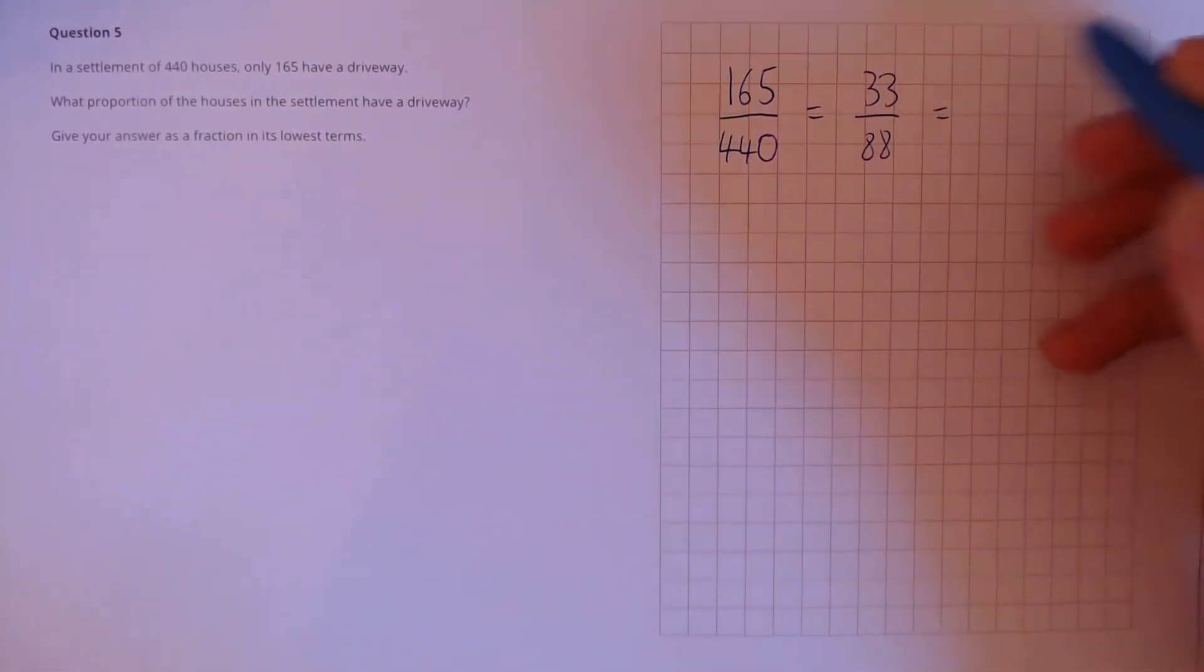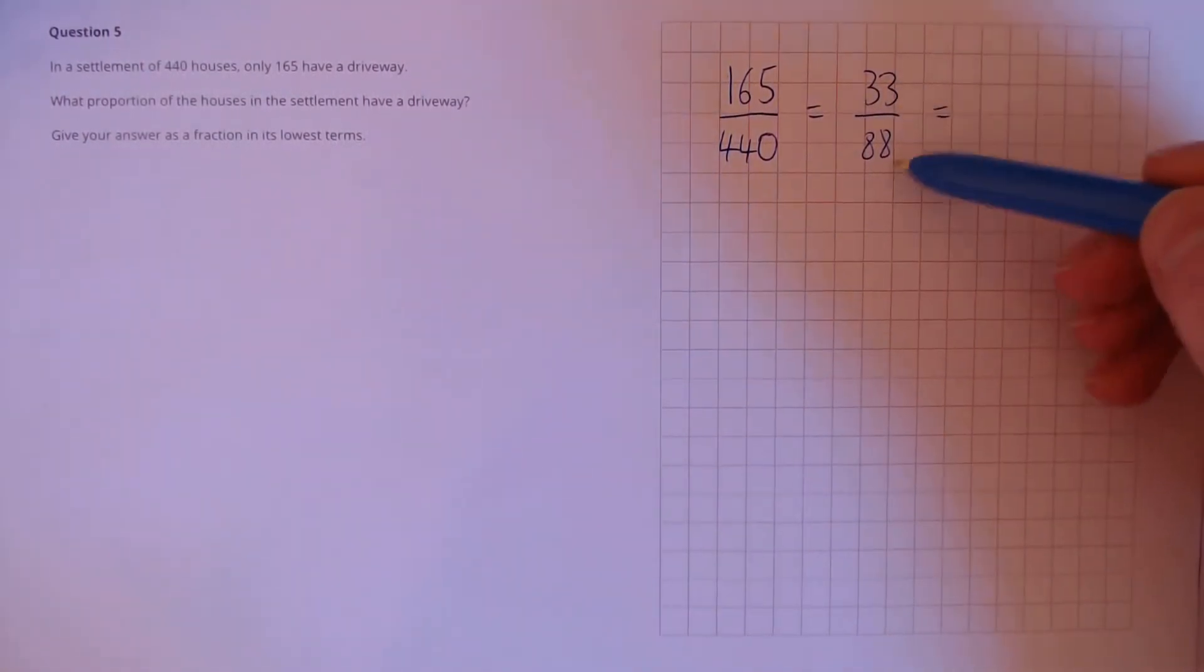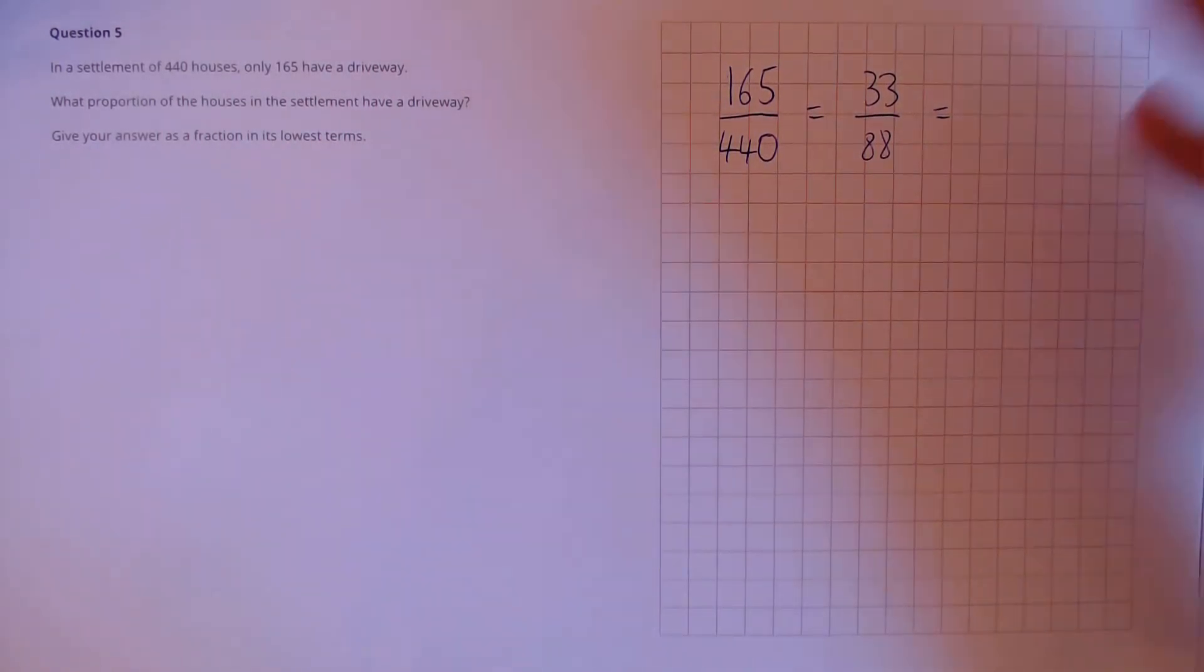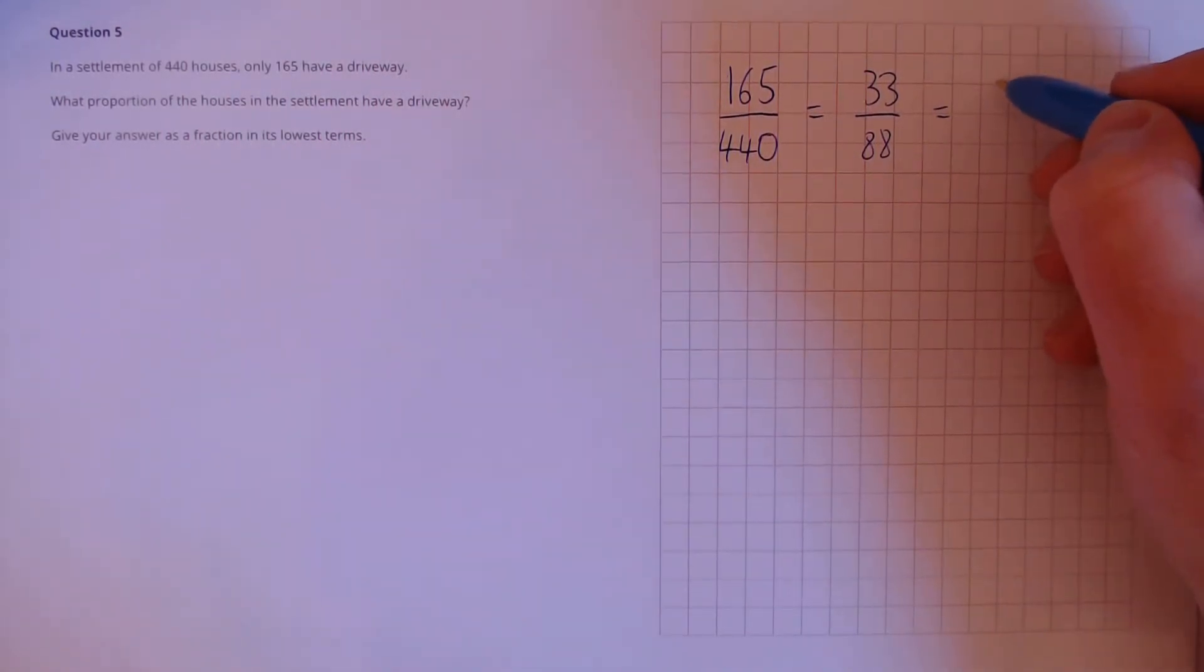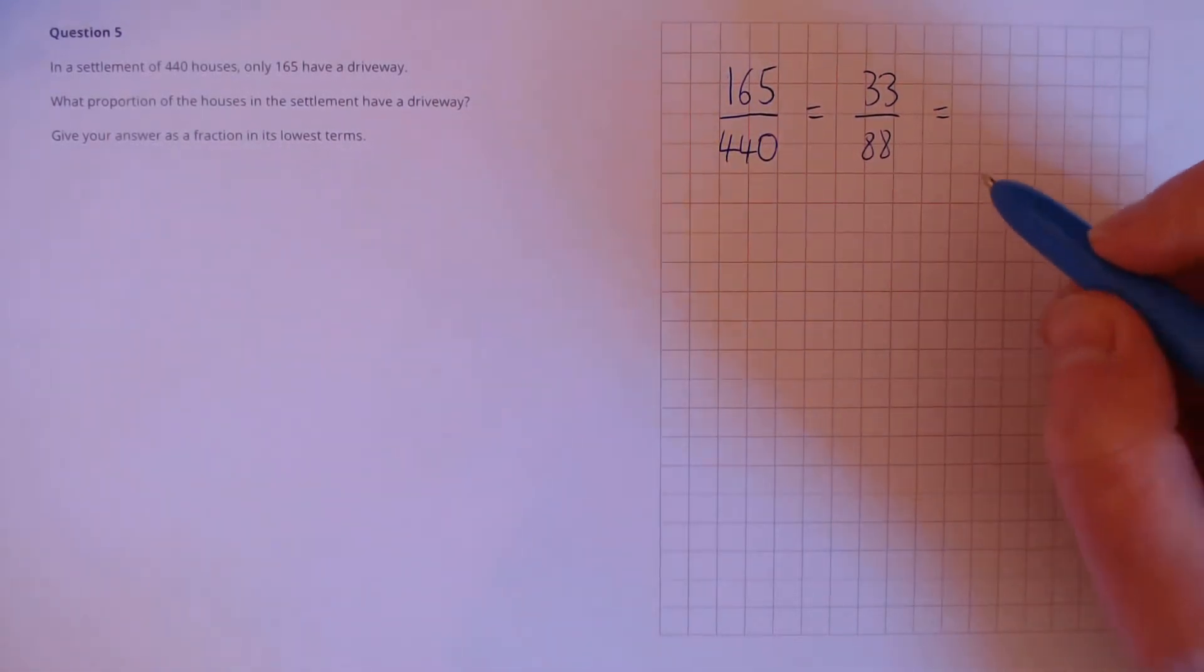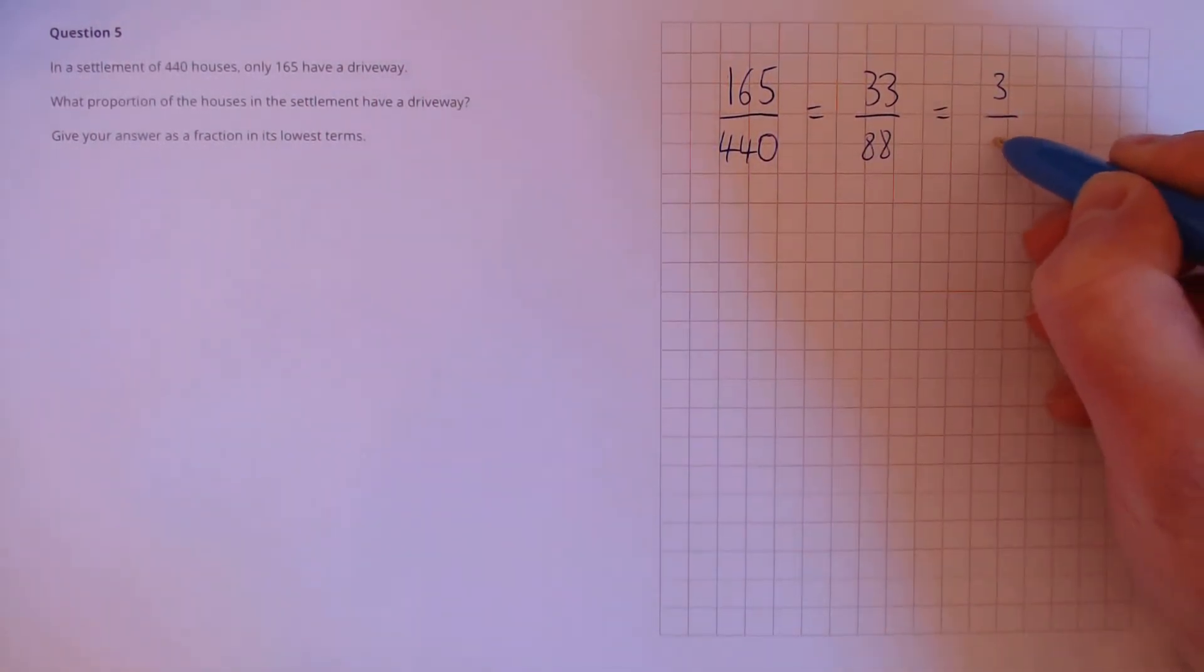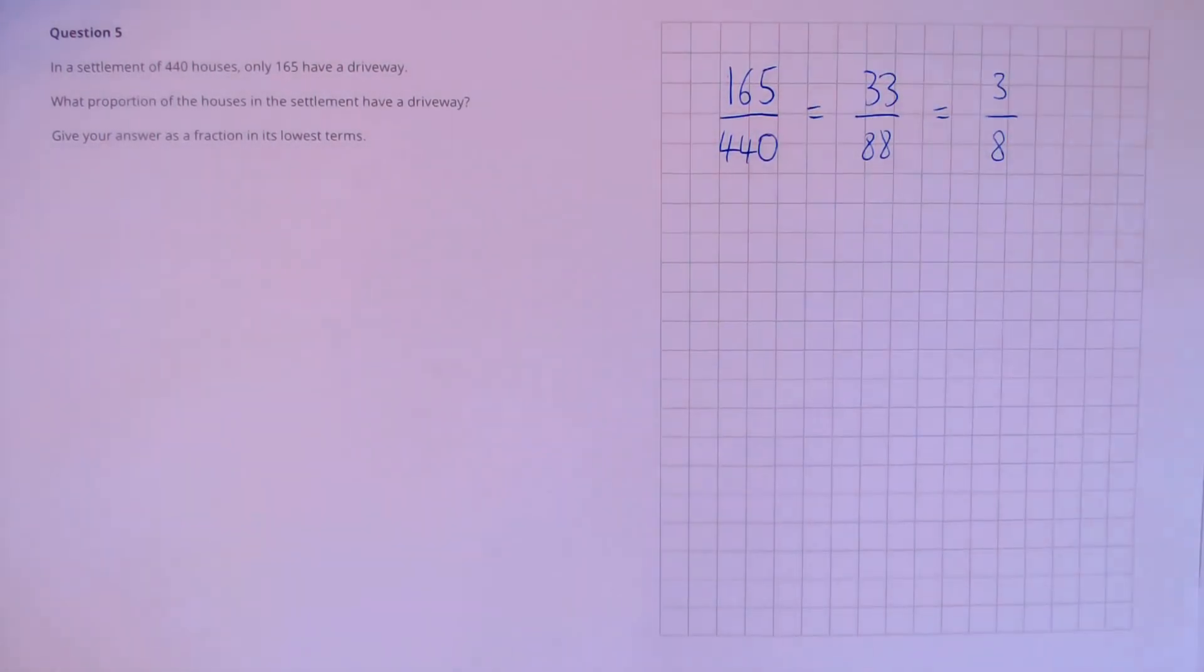The next simplification we can do is divide by 11. We see that 33 and 88 can both be divided by 11. So let's do 33 divided by 11, that's 3, and 88 divided by 11, that's 8. So our answer is 3 divided by 8.